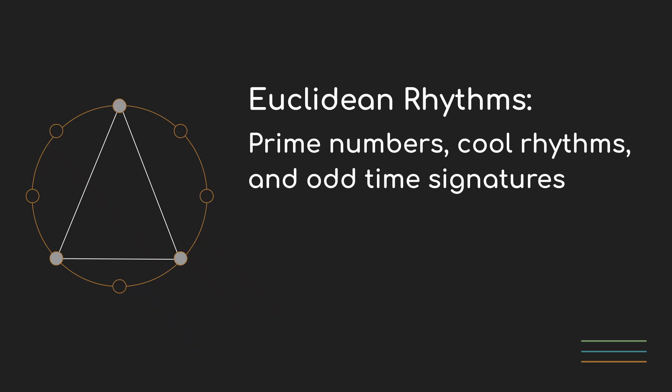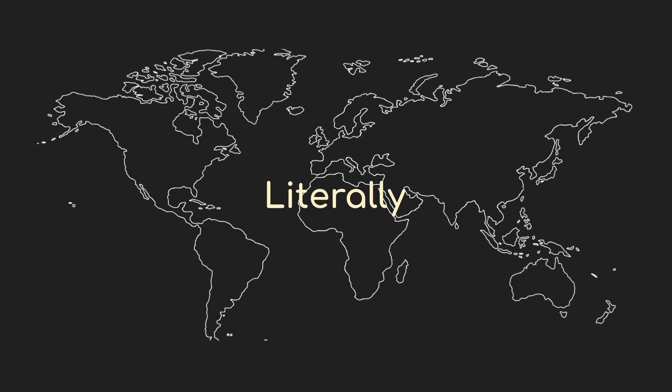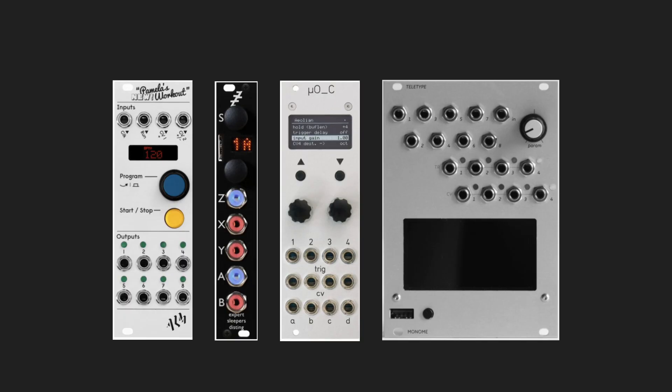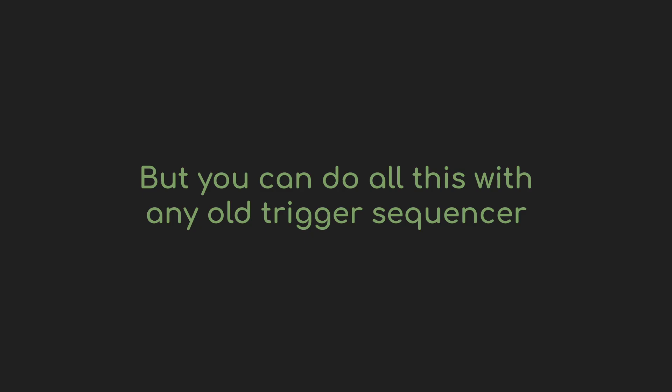As a math geek, I'm always fascinated by the mathematical relationships in music. Today I really want to dig into a relatively recent discovery: Euclidean rhythms or patterns. These can be a really effective way to create and explore real rhythms from around the world. There are a number of modules dedicated to Euclidean rhythms, but it's also a common feature in more general modules like Pamela's New Workout. It's important to remember that you don't need a specialized module if you have just a regular trigger sequencer — you can do everything I'm about to describe here.